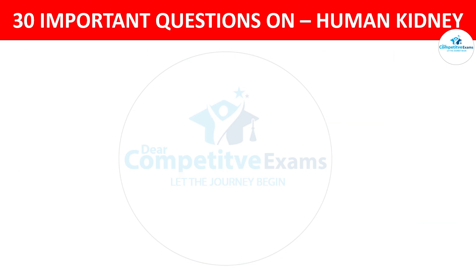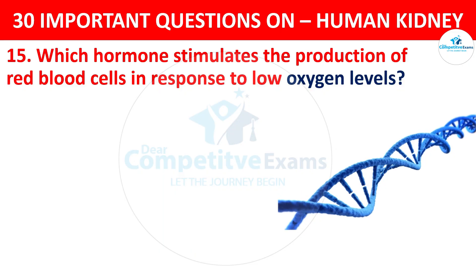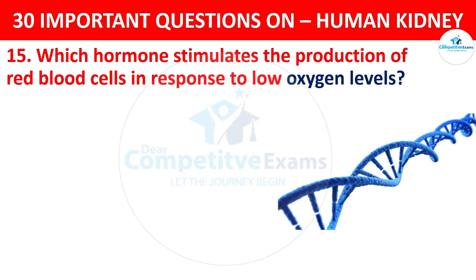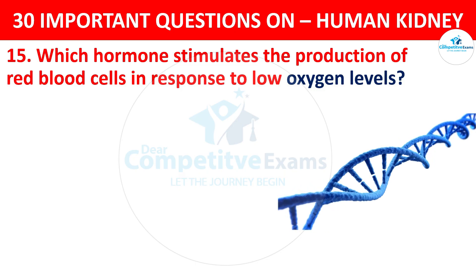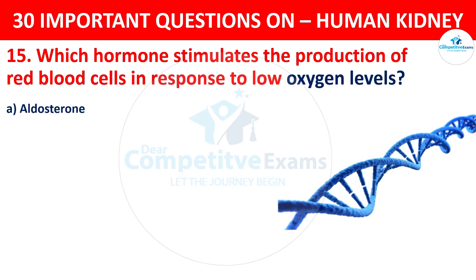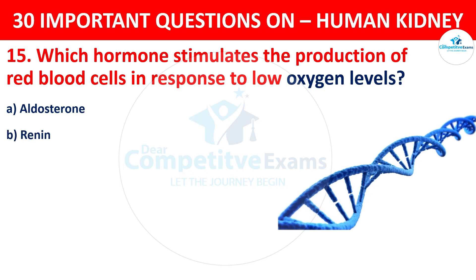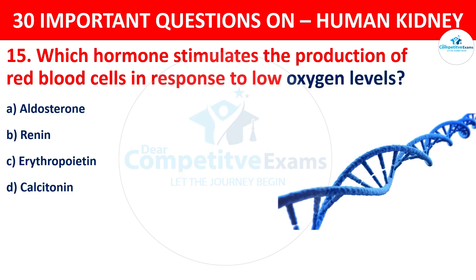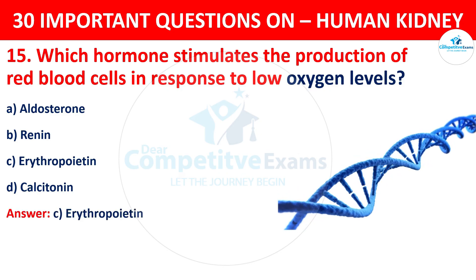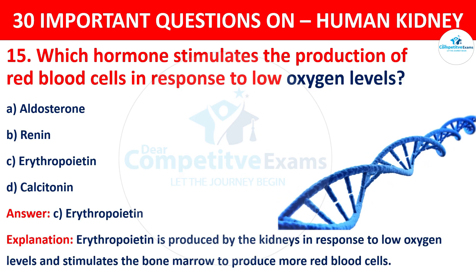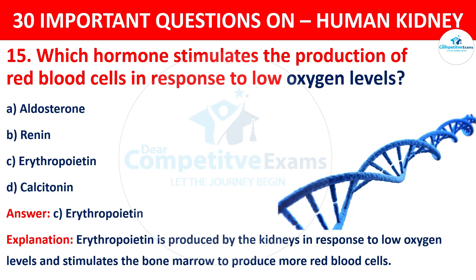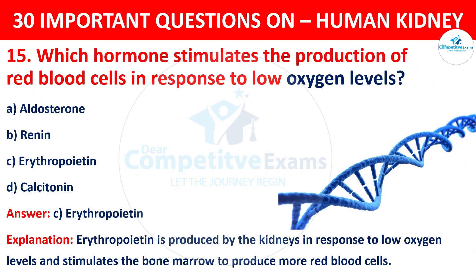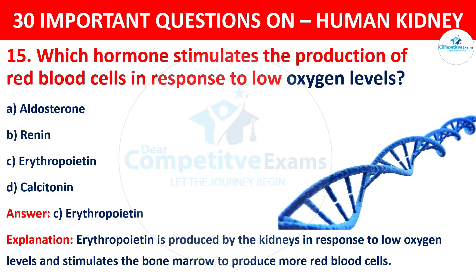Question 15. Which hormone stimulates the production of red blood cells in response to low oxygen levels? The options are: Aldosterone, Renin, Erythropoietin, or Calcitonin. The correct answer is C, i.e. Erythropoietin. Erythropoietin is produced by the kidneys in response to low oxygen levels and stimulates the bone marrow to produce more red blood cells.